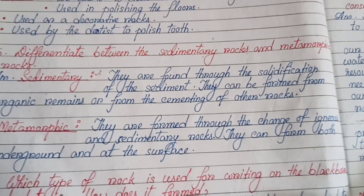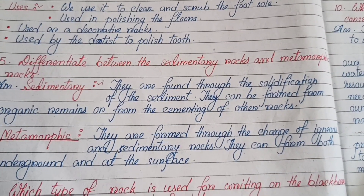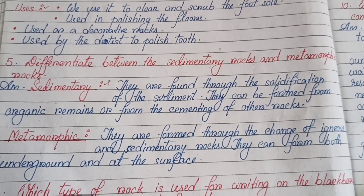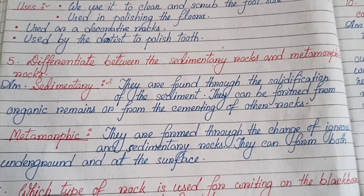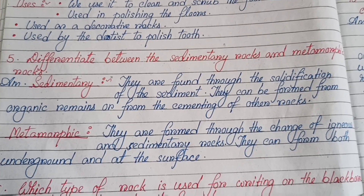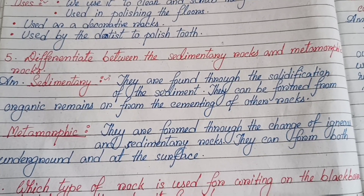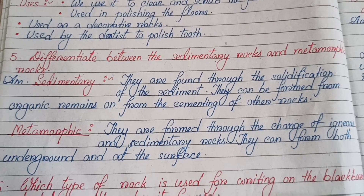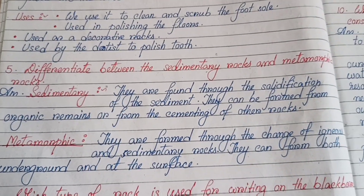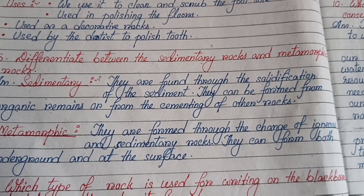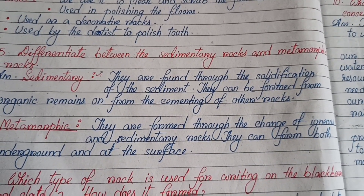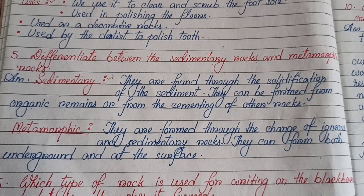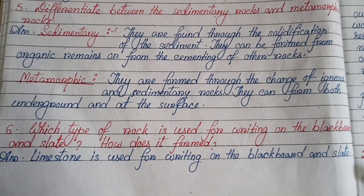Number five: Differentiate between sedimentary rocks and metamorphic rocks. Sedimentary rocks: they are formed through the solidification of sediment; they can be formed from organic remains or from the cementing of other rocks. Metamorphic rocks: they are formed through the change of igneous and sedimentary rocks due to heat and pressure; they can form both underground and at the surface.